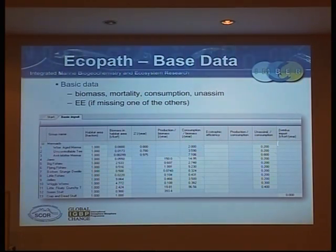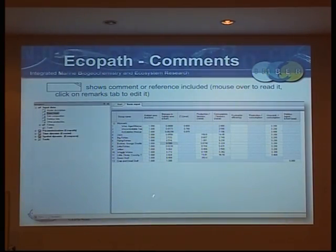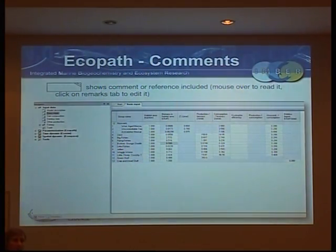And how much detritus is flowing in from outside the system — so in places like seamounts you've got a big flux coming in. If you see a cell with a little set of hashes in the corner, that means there's a comment. You have to go down to the remarks section to see it. It became our habit quite early on to write into the model itself where you got the data from and what you did to get it to balance — keep a log yourself that's easy to access.